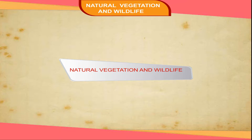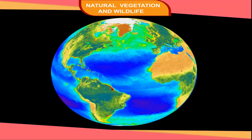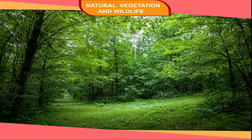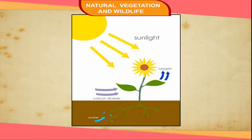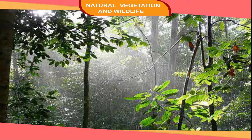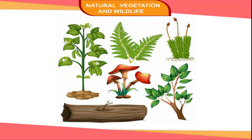Natural Vegetation and Wildlife. Our Earth is unique as it has a green cover over it, which is called natural vegetation. The green cover is possible because of sunlight, water, and soil available on Earth. The plants produce their own food from sunlight, water, and carbon dioxide. Sunlight and rainfall are the two vital factors which control the type of vegetation, and varying amounts of these in different places have given rise to different types of plants.